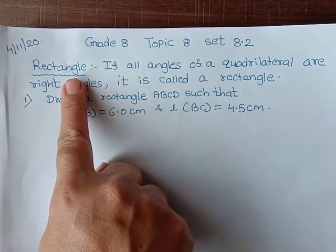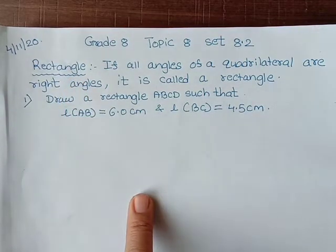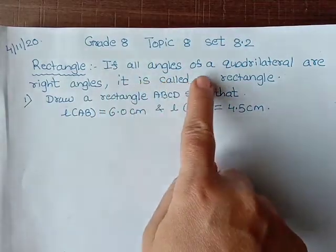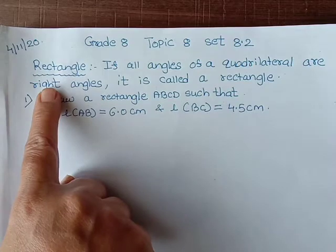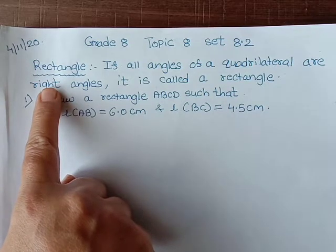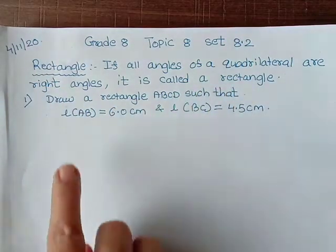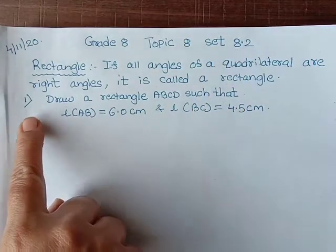See the definition of rectangle. Many times it is asked for MCQs, so please remember this. If all angles of a quadrilateral are right angles (right means what measures 90 degree), it is called a rectangle. Now 8.2 exercise, first question.